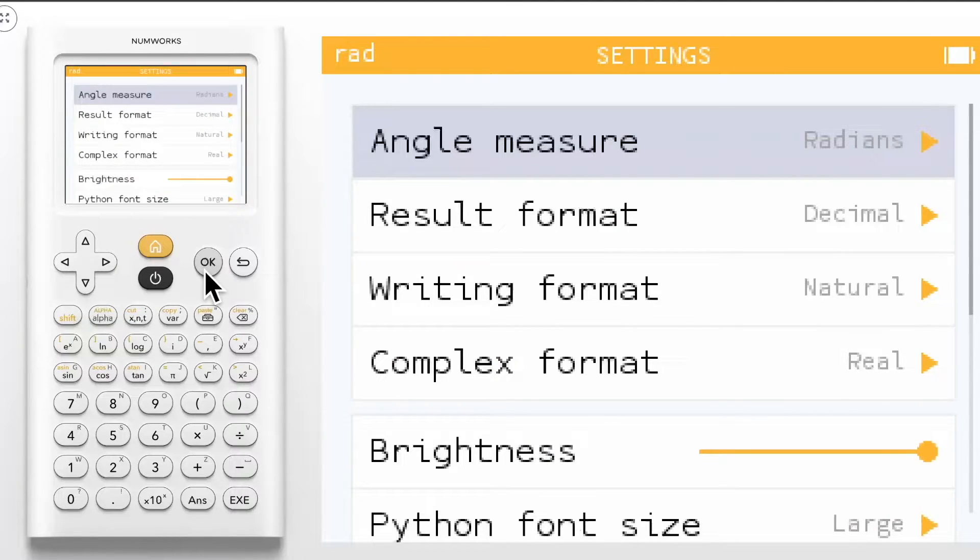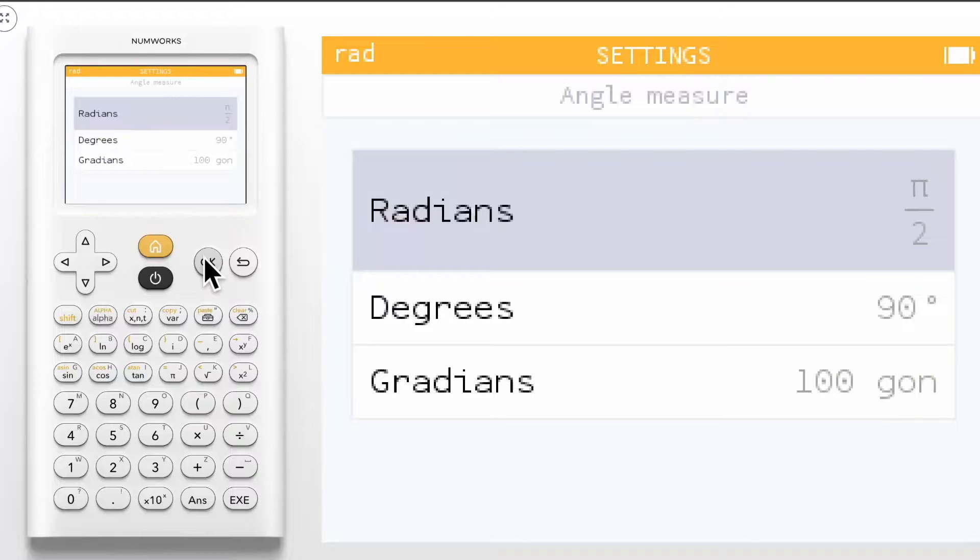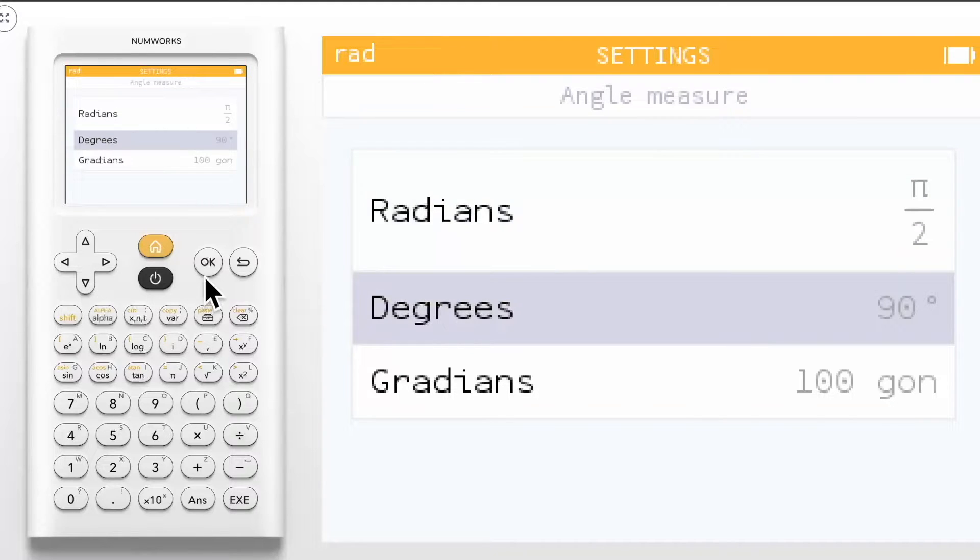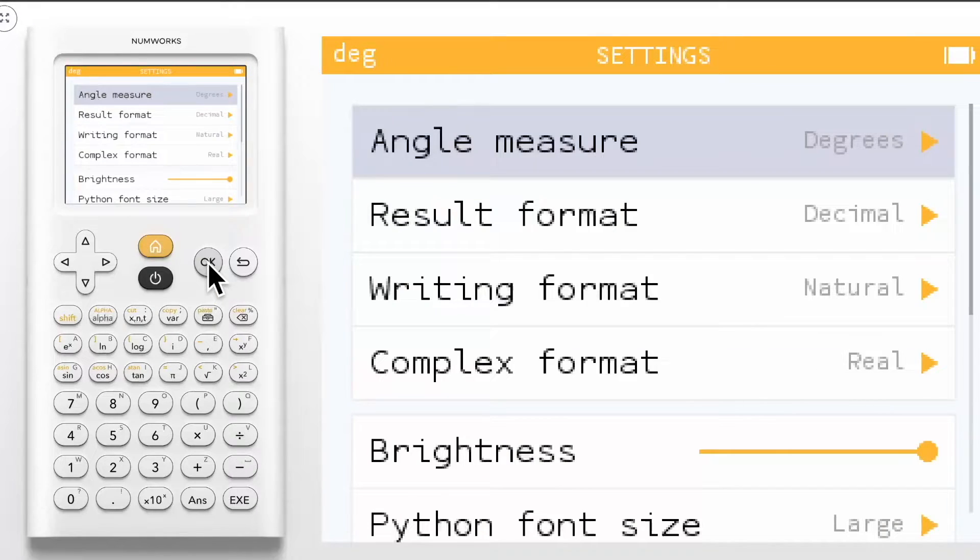Within angle measure, you can choose between radians, degrees, and gradients. Highlight your preferred setting, let's choose degrees, and press OK. The top left corner of your screen will update to DEG for degree.